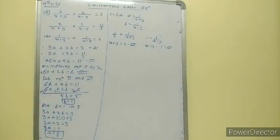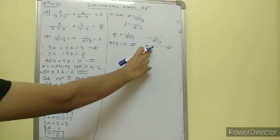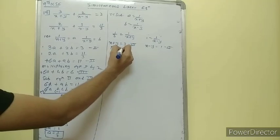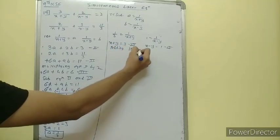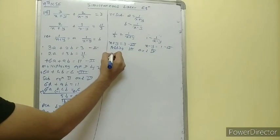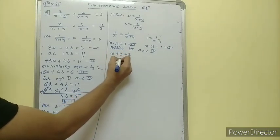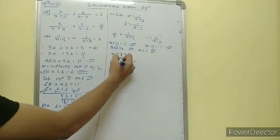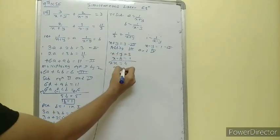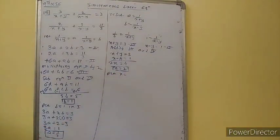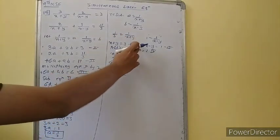And what is the value of b? That is 1. So 1 is equal to 1 upon x minus y; reciprocating, x minus y is equal to 1 — equation number 4. So equation 3 and 4: we have plus y and minus y, so we will add them. Adding equations 3 and 4: x plus y is equal to 3, x minus y is equal to 1. The y's cancel; 2x is equal to 4, so x is equal to 2.